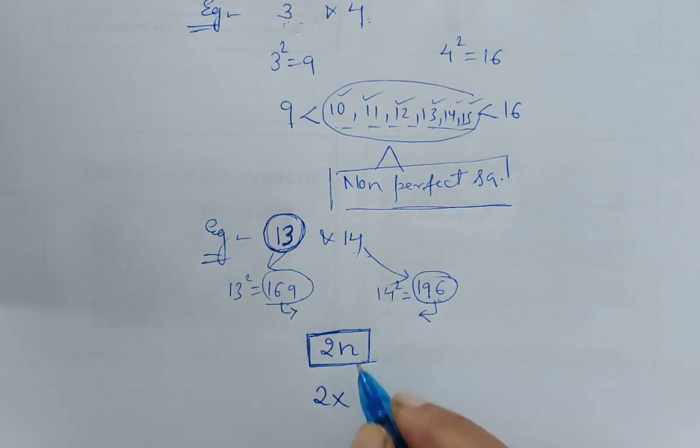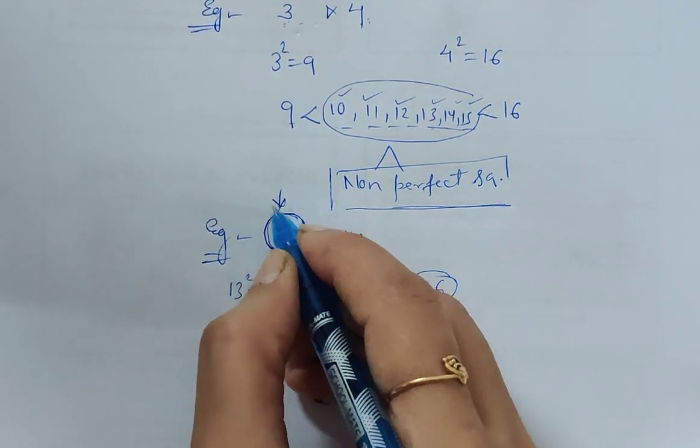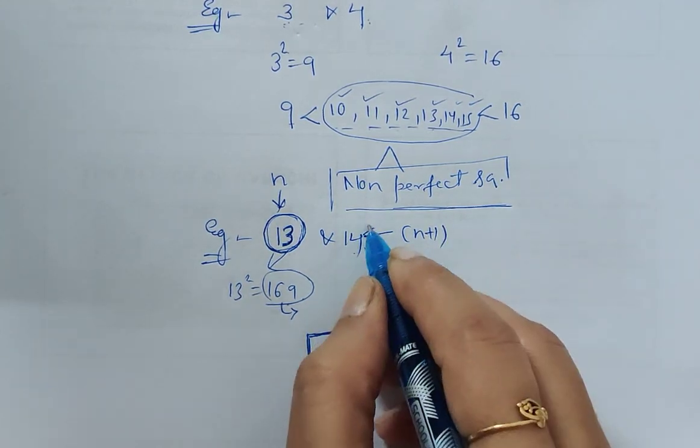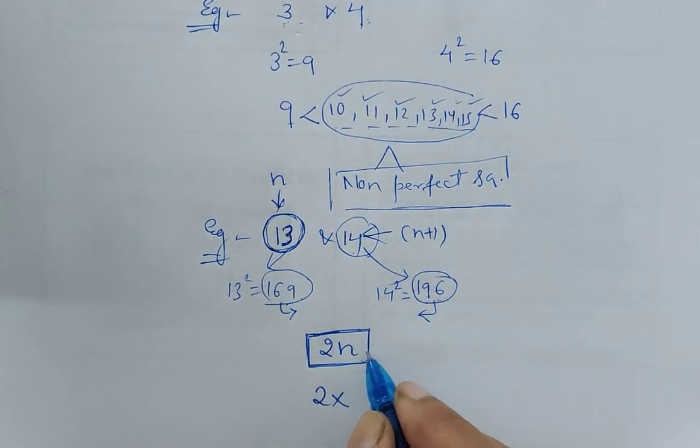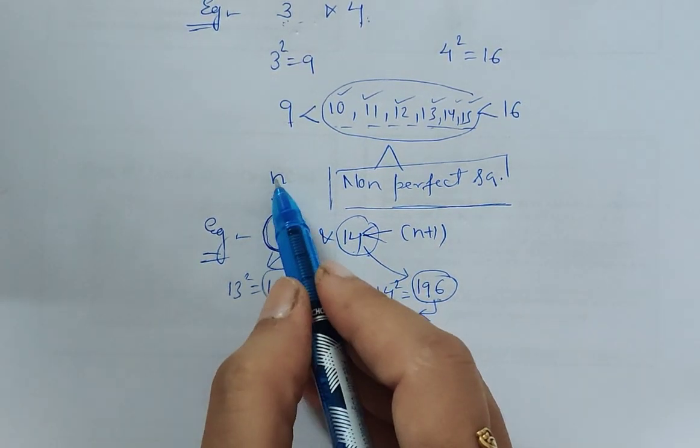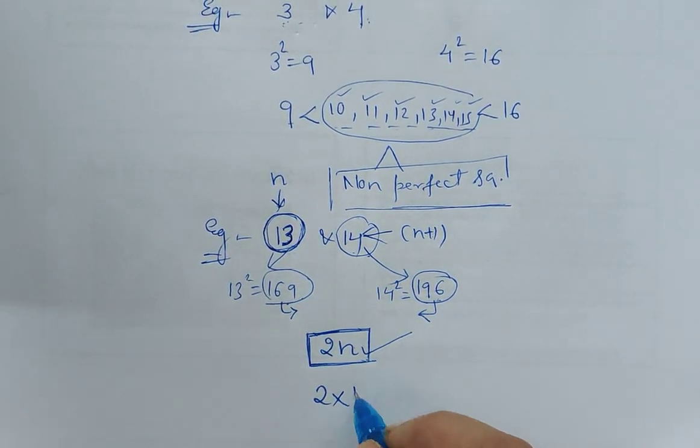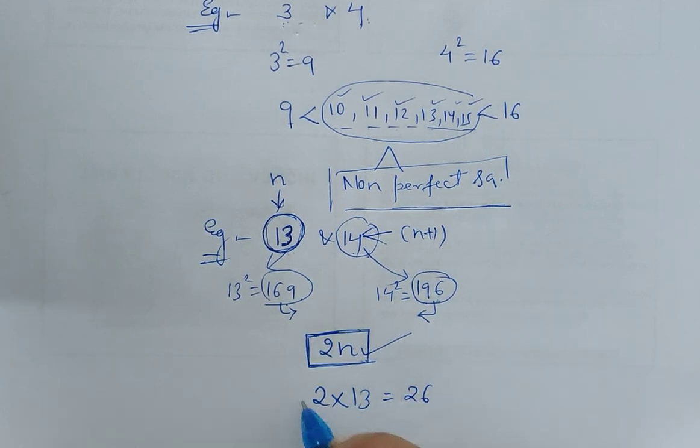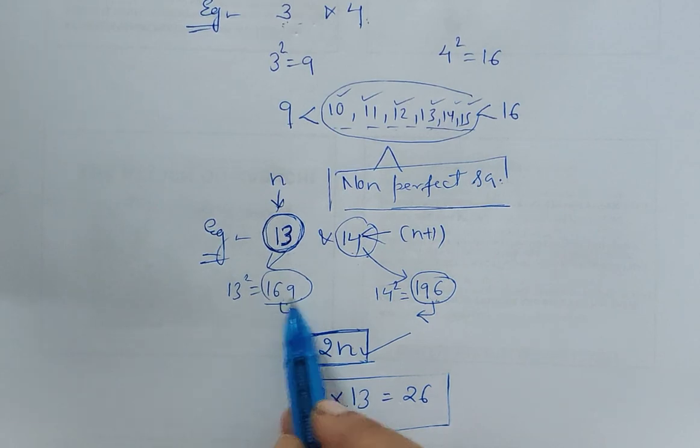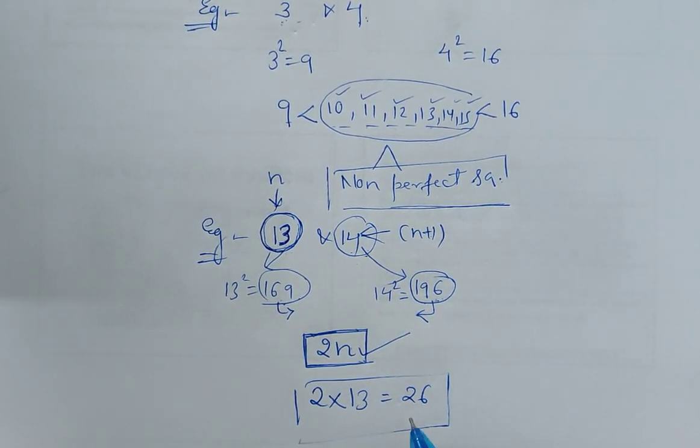Between them there will be 2 into n. This is n and this is n+1. We don't have to do anything with n+1 for calculating the values. Just take 13, so 2 into 13, that means 26. There are 26 such non-perfect squares between these two numbers.